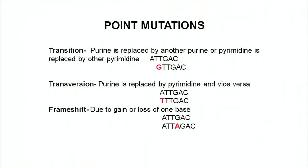Point mutations include transition and transversion. Transition is when a purine has been replaced by another purine - guanine and adenine are purines, so if adenine is changed to guanine in the mutated DNA, that is a transition. Transversion is when a purine is replaced by a pyrimidine - for example, adenine being replaced by thymine.